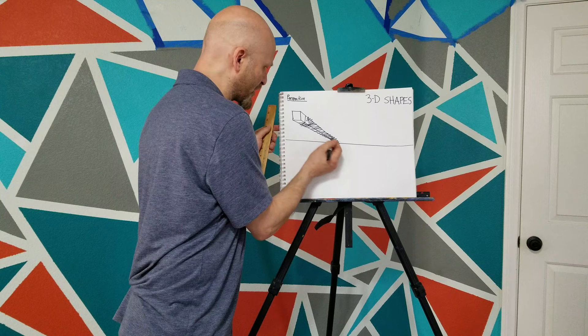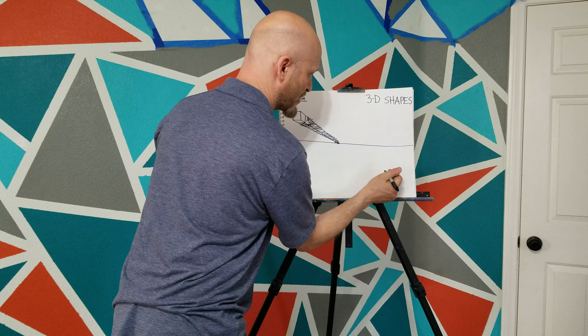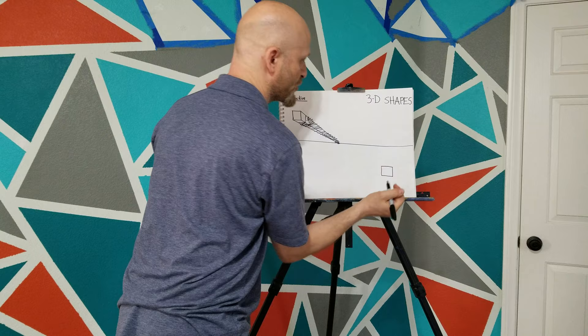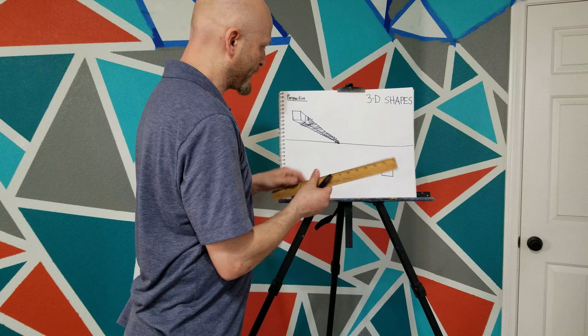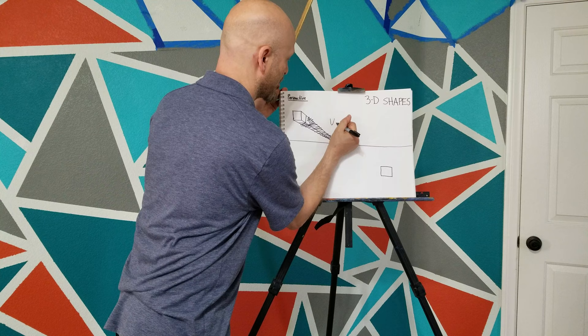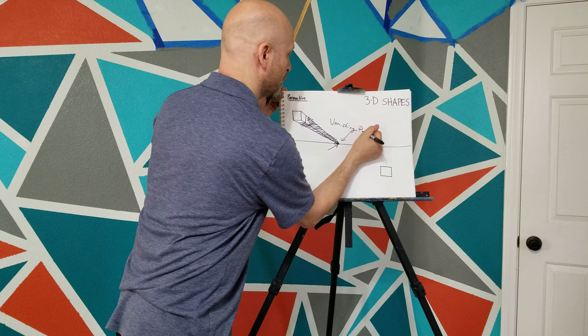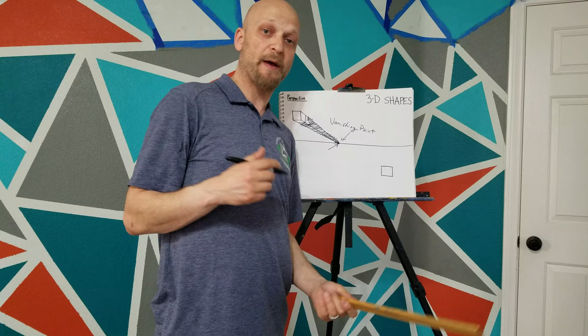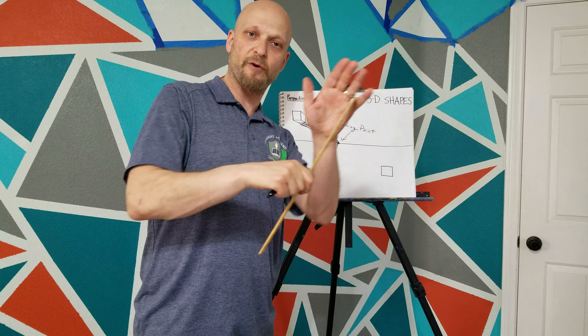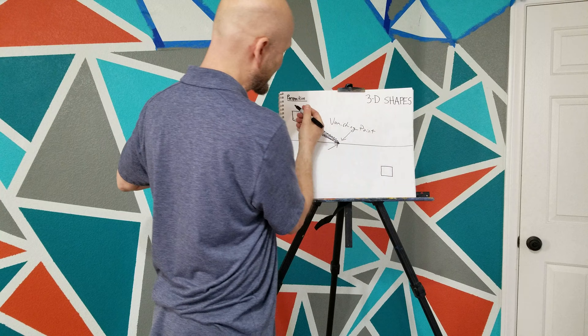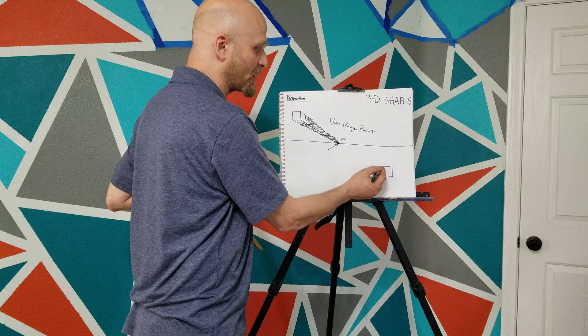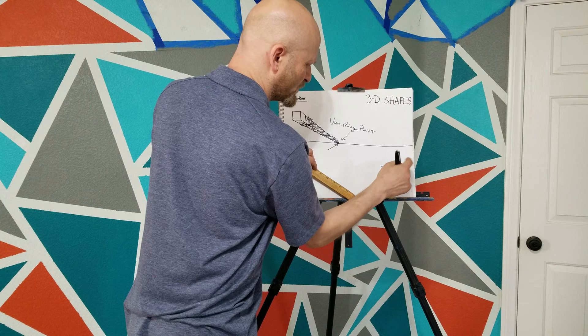Let's show one more to demonstrate that wherever you put your shape determines where your orthogonal or converging lines go — these are the lines that go toward the vanishing point. Let's do one below the horizon line. Draw a square; you can draw these freehand or with a ruler. Now we're going to go up toward our vanishing point. Remember, this is still the vanishing point right here — the vanishing point is the most important thing on the page. Every line goes toward it; all the lines converge and meet at the vanishing point.